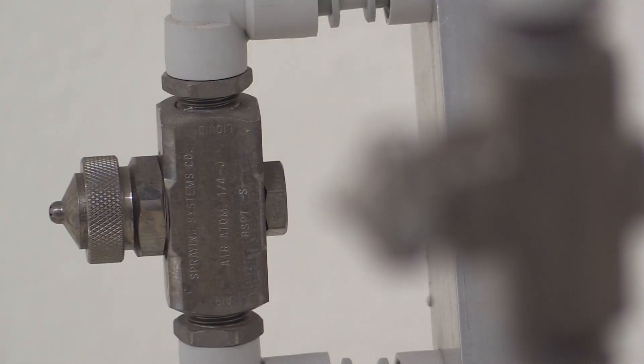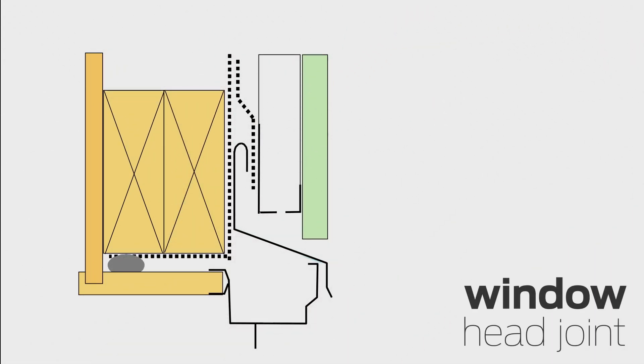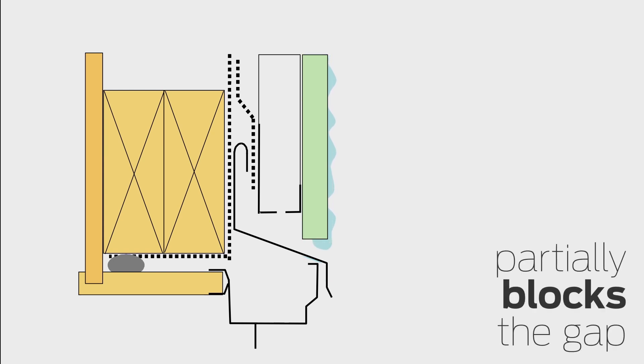We started with a window head joint and found that the extent of runoff has a bearing on how the joint performs. So let's turn on the rain. What happens is that this builds up as a form of water flowing down the facade. This can actually partially block the gap between the cladding and the head flashing.